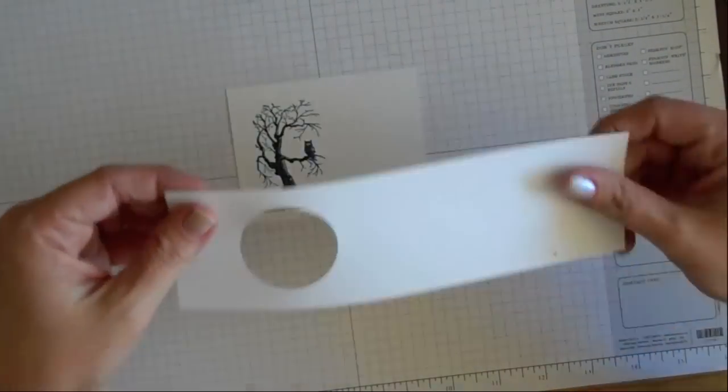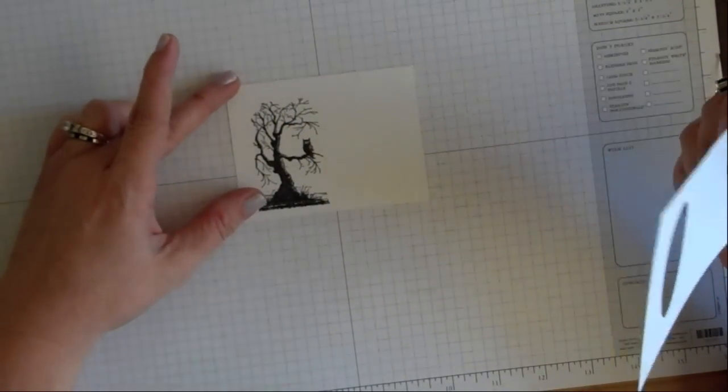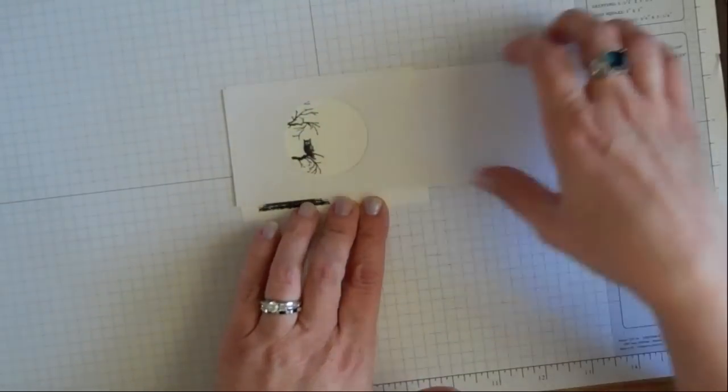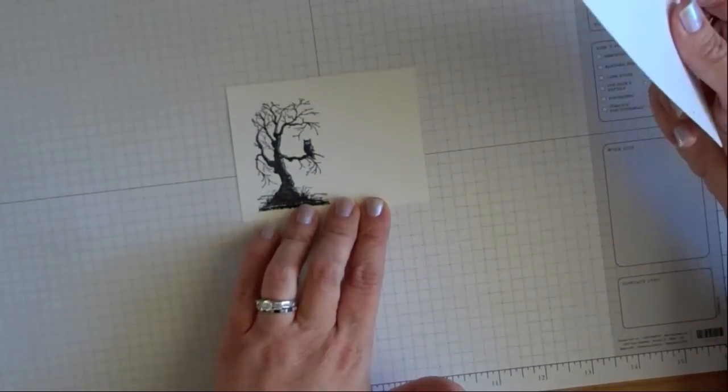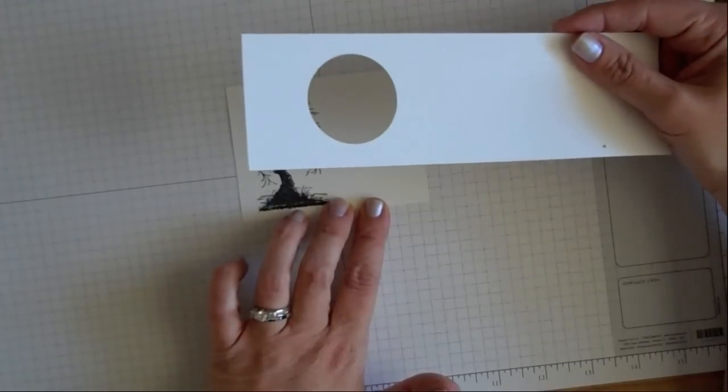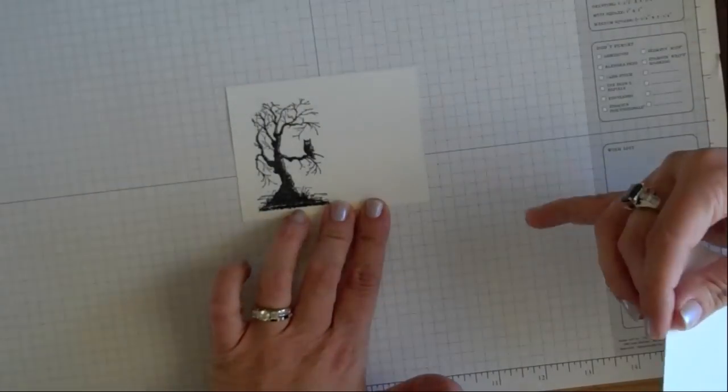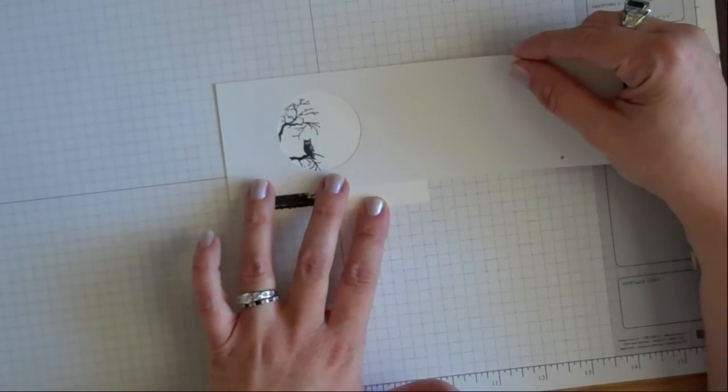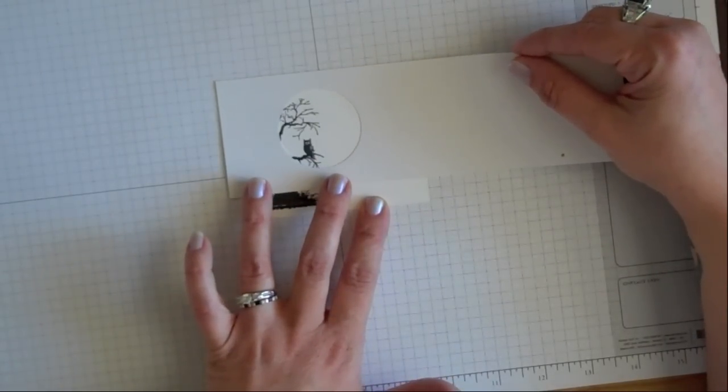But for today's project, we're going to use the circle as a mask to just mask the one area that we're going to sponge. Let's go ahead and place your mask over it where you want your circle to be basically.